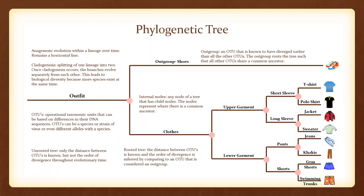For example, the t-shirt and polo shirt branches are more closely related to each other than the overall short sleeve and long sleeve branches. Now let's go over some terms that will help you understand phylogenetic trees better and see which terms apply to our specific tree.